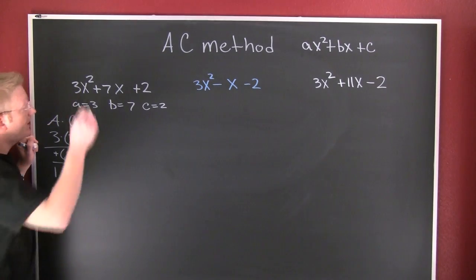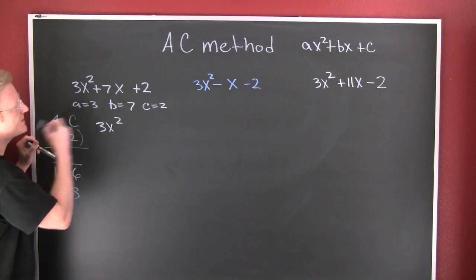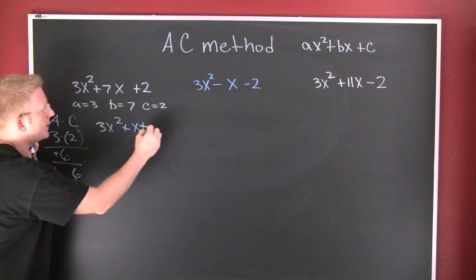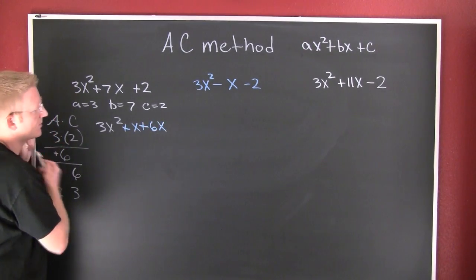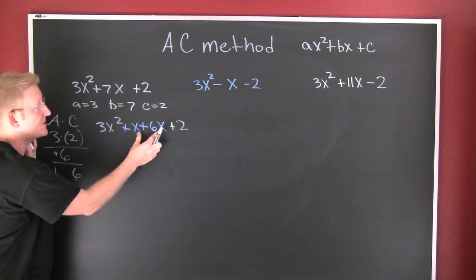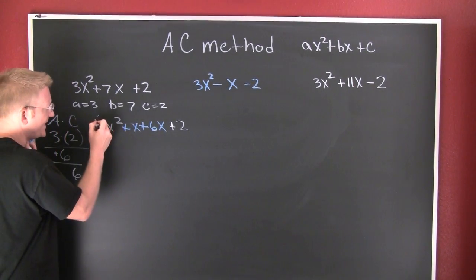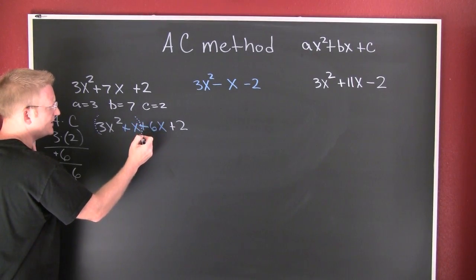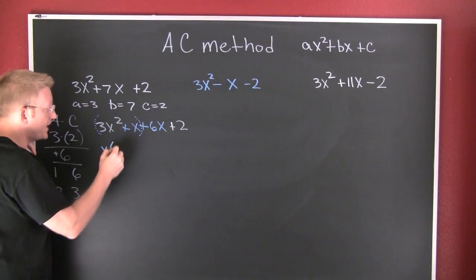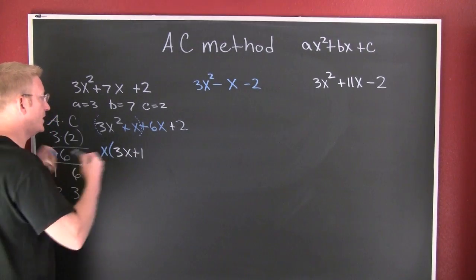So what I want to do is write an equivalent expression. I'm going to rewrite my middle term. The signs are the same and they're both positive, so I'm going to do 3x² plus x plus 6x plus 2. I rewrote the middle term — 1 and 6 add to 7 — so that I could factor by grouping. Do I have a common factor in this first group? It appears I have an x, so I'm going to pull that out. Left on the inside, I'm going to have 3x plus 1.